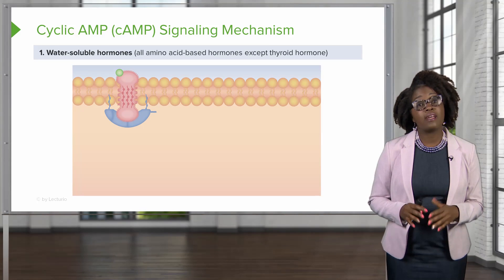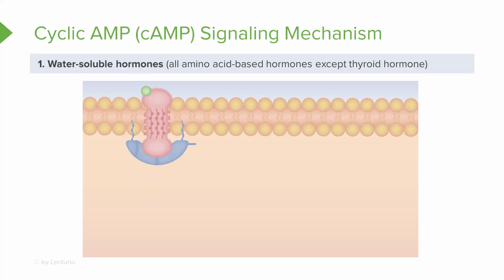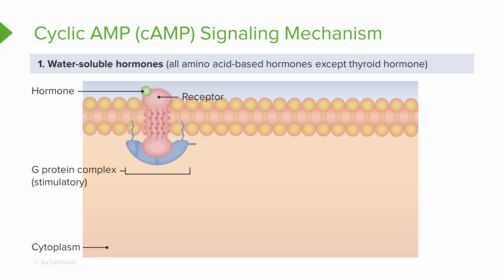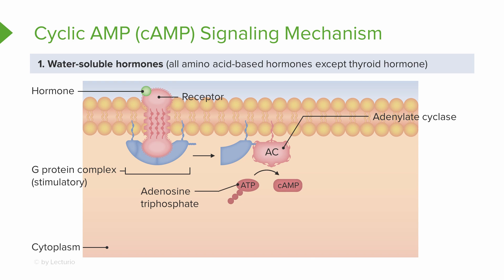If we take a closer look at the cyclic AMP signaling mechanism, we find that first our messenger — the hormone — is going to bind to the receptor on the target cell. Binding of this hormone to the receptor activates a G protein, since this receptor is usually called a G protein-coupled receptor. Once the G protein is active, it's going to activate or inhibit other enzymes known as adenylate cyclase. The adenylate cyclase then converts ATP in the cell to the second messenger, cyclic AMP.